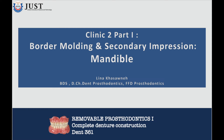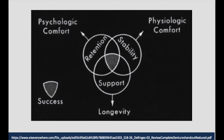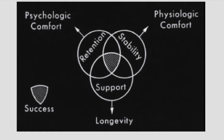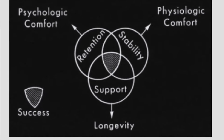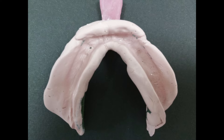The objectives of impression making are to capture all potential denture-bearing surfaces and tissues to provide support, retention, and stability of the denture under function. The denture base also acts as a foundation for improved appearance of the lips. The denture should extend peripherally to record the resiliency of the surrounding limiting structures, which include creating appropriate length and width of the final denture borders.